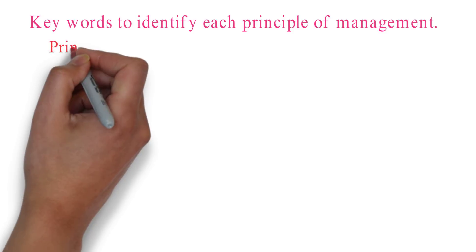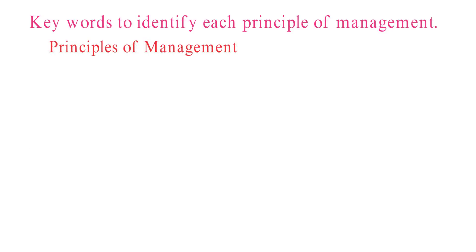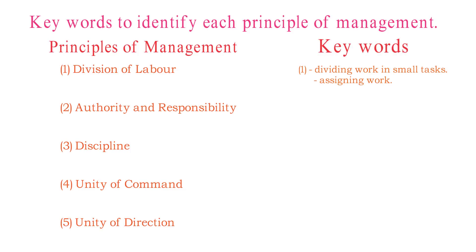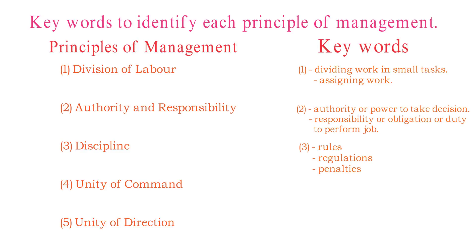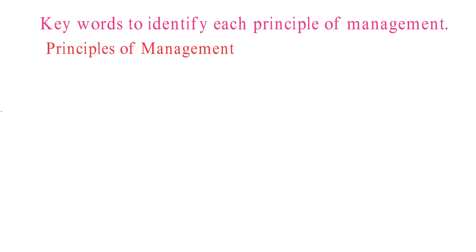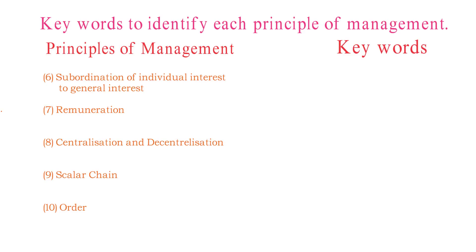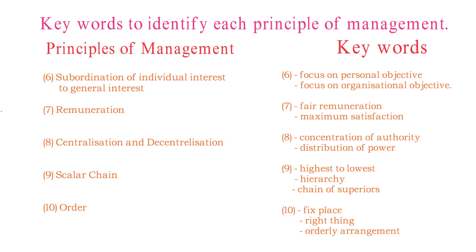Here comes the list of keywords which will definitely help you in identifying the principles of management. As you saw in the example of Unity of Command, the line given was 'receiving orders from two superiors,' hence the principle violated was Unity of Command — because to avoid confusion, employees should receive orders from only one boss so they can work in one direction.